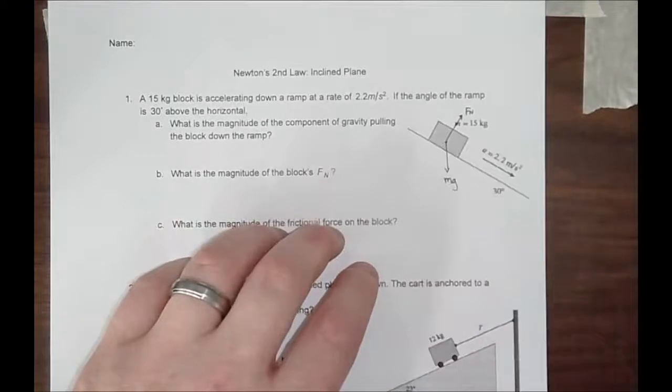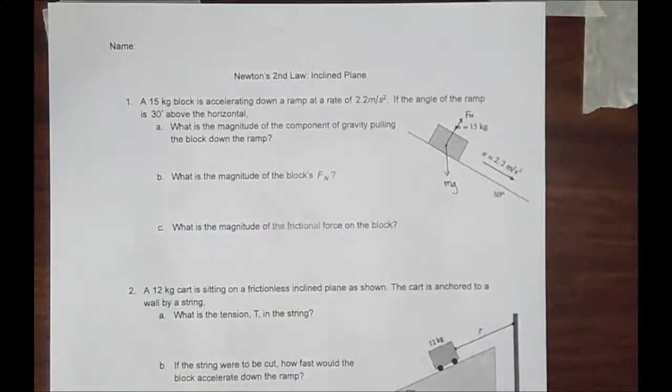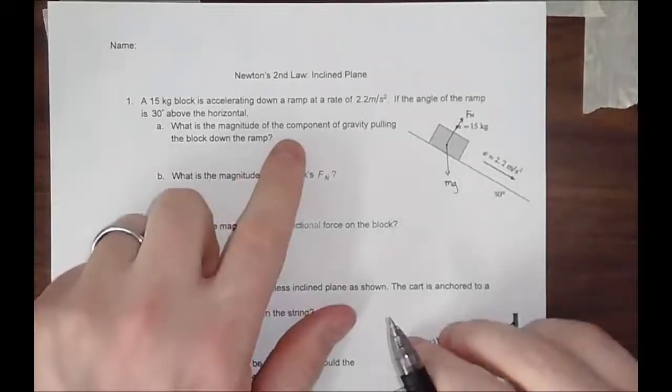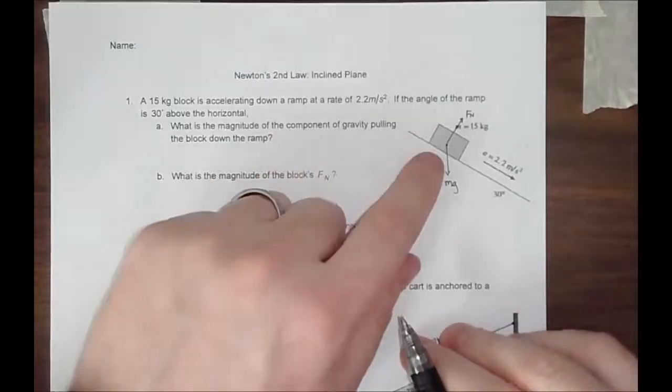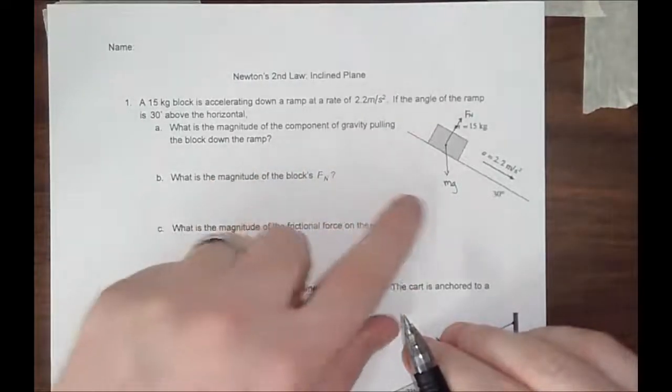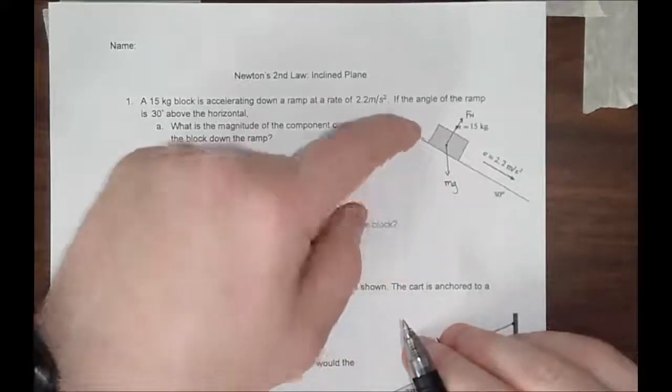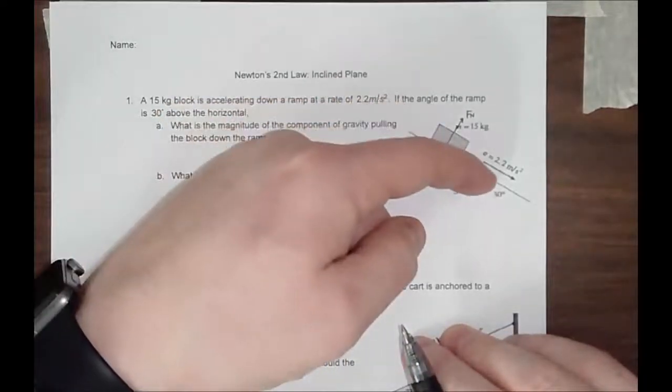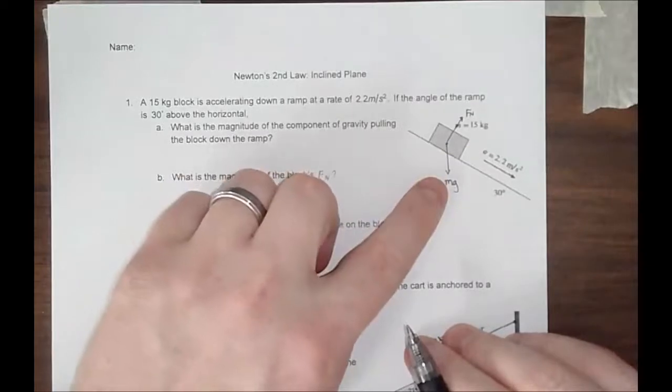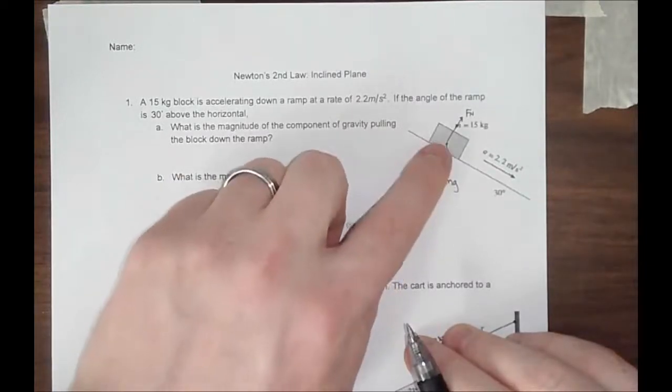There is no friction involved, so if you were drawing a free body diagram, you are done. Please note, the components of this are different than the forces. Even though gravity is essentially pulling this object down the ramp, it is not the full force of gravity. It is the component of gravity.